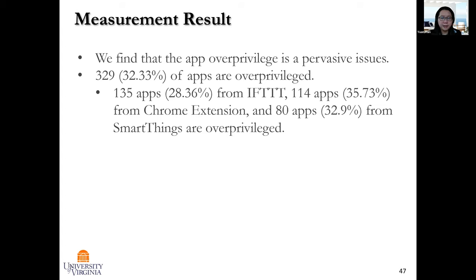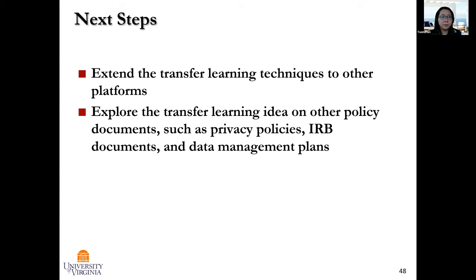These two projects tell us that it's possible to extract useful information about security and privacy from unstructured documents, and we can do lots of automation to identify security and privacy policies from these documents. We are currently extending transfer learning techniques to other platforms with success, and also exploring the transfer learning idea on other policy documents such as privacy policies, IRB documents, and data management plans. We look forward to collaboration in these areas because the more data we have, the more accurate the model is. We'll be happy to share our datasets and code for getting this kind of analysis working together.